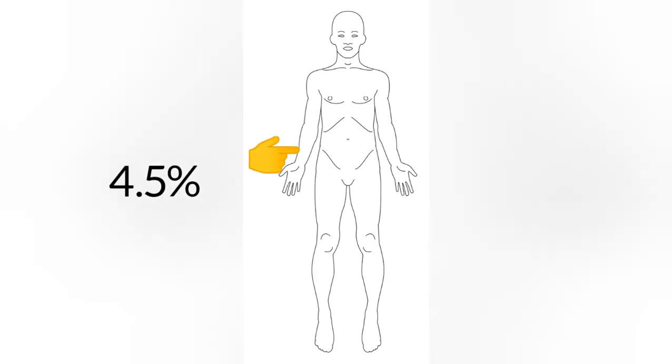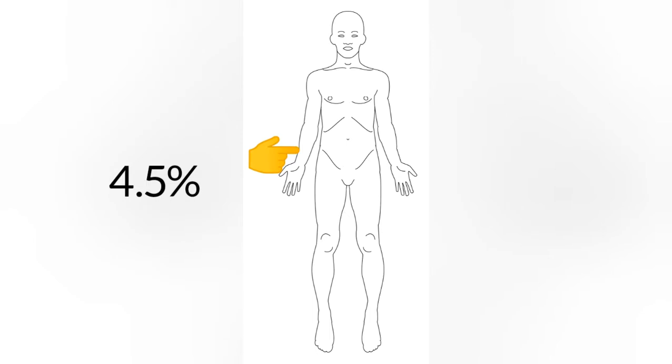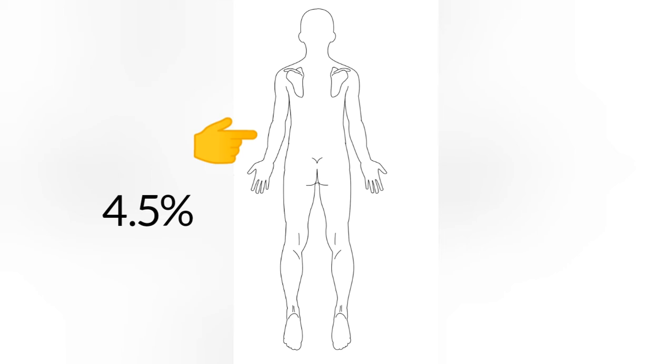4.5 percentage for the front side of the upper limb, 4.5 percentage for the back side of the upper limb.